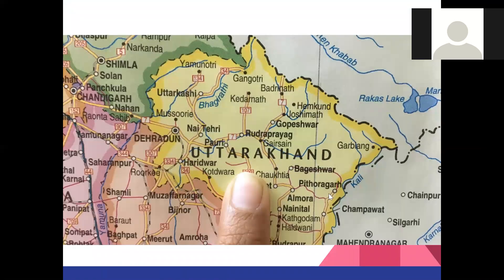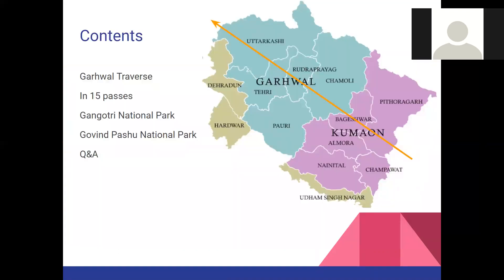Looking at Uttarakhand, we'll be focusing on the western part, going through Joshimat, Badrinath, Kedarnath, Gangotri, Yamunotri, and Uttarkhand. These are the high ranges. We'll be traversing through the mid-range passes — over 30 passes in total across Uttarakhand. Today we focus on Garwal, which covers five districts: Uttarkashi, Uttarpradesh, Chamoli, Tehri, and Pauri.